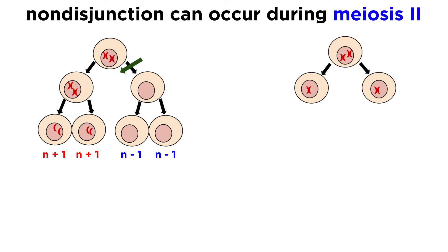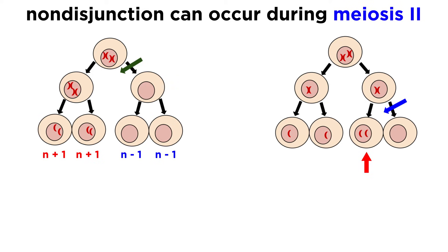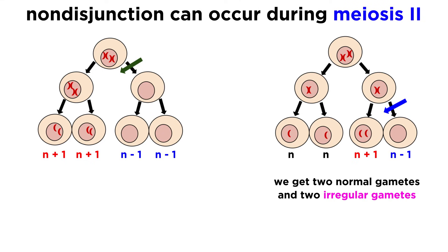Alternately, say that in meiosis II, a pair of sister chromatids do not get properly pulled apart, and they both go to one daughter cell and not the other. Assuming everything went properly with the other daughter cell from meiosis I, the end product will be two normal gametes, and then one N plus one and one N minus one gamete, due to the non-disjunction.